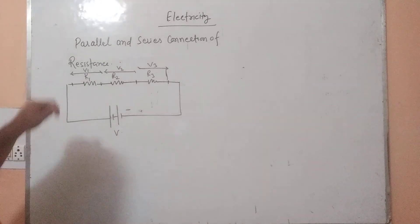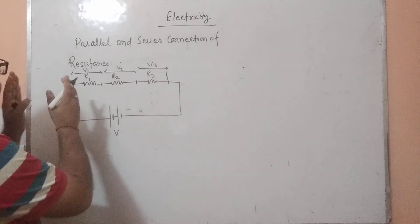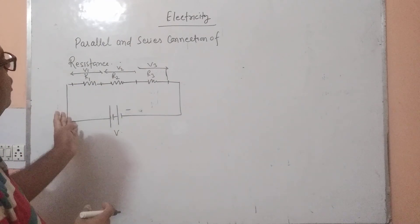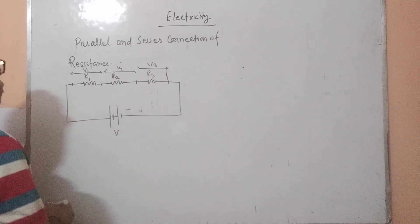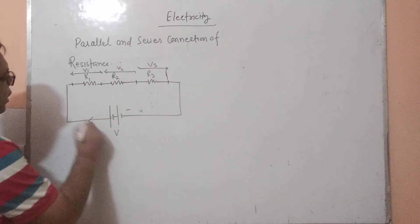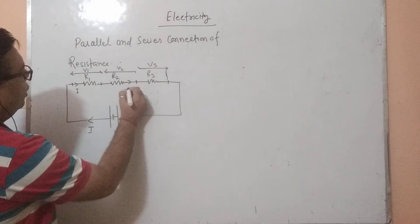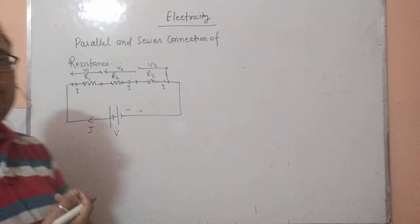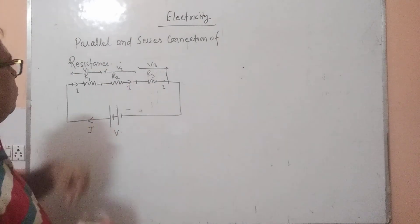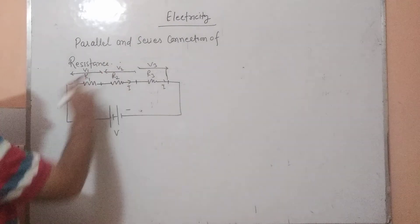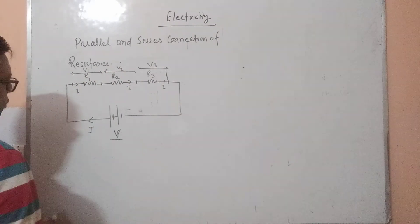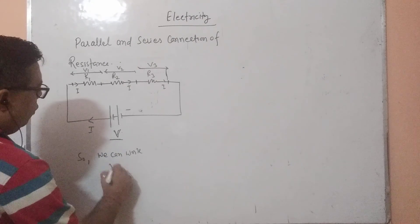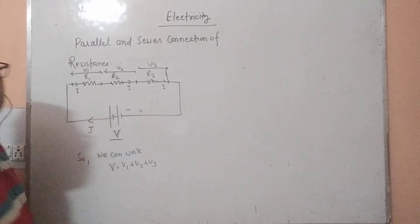It means that in series connection, for every resistance the potential difference varies — it is not constant, it changes. The same current flows through all the resistances; there is no distribution in current. But the potential difference will be different, and the total potential difference V is equal to V1 plus V2 plus V3.